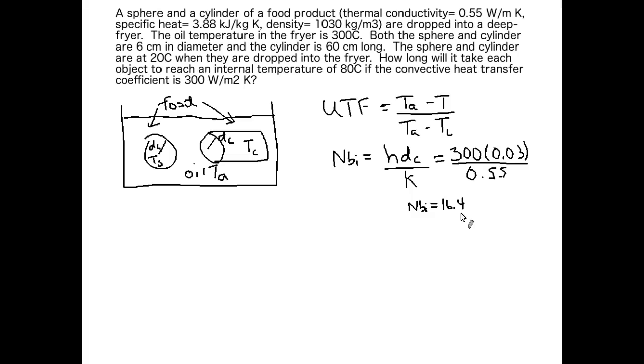If the Biot number is greater than 40, that means convective heat transfer is very fast and what's controlling the rate of heat transfer is conduction. If the Biot number is less than 0.1, then that means conductive heat transfer is very fast and convection is what's controlling the rate of heat transfer. But when the Biot number is between 0.1 and 40, that means conduction and convection are both controlling the rate of heat transfer and that's the case we have right here.